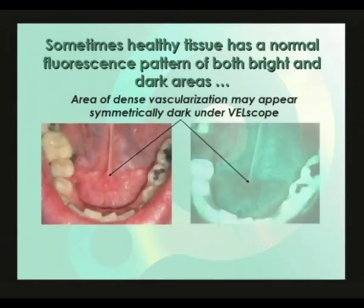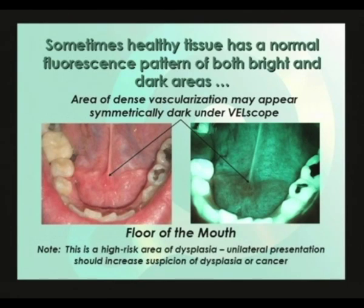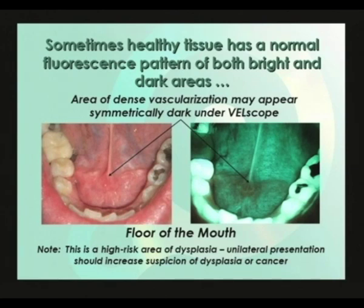Here we see a Velscope picture of the floor of the mouth and the corresponding area under white light illumination. The ventral surface of the tongue is also partially visible at the back. The area around the submandibular gland ducts can be well vascularized, and is particularly so in this example, showing up as a symmetrically dark area under Velscope. Although the symmetry and shape of this dark area is suggestive of normal tissue, the floor of the mouth is a high-risk area for dysplasia. Watch out for non-symmetrical areas giving a unilateral presentation, as these should increase suspicion of dysplasia or oral cancer.